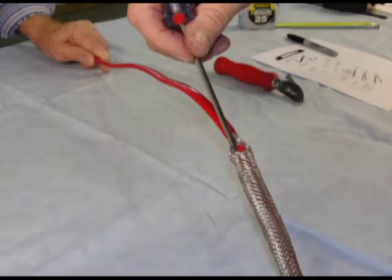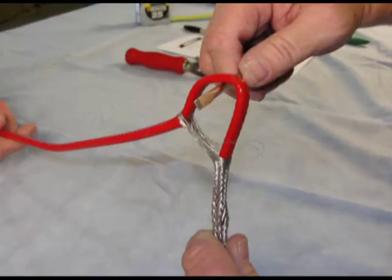Push braid back to create a pucker. At pucker, use a screwdriver to open braid. Bend heating cable and work it through opening in braid.